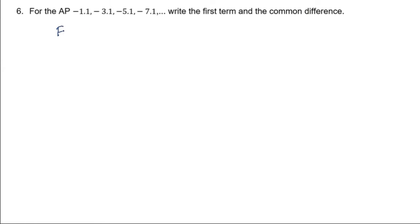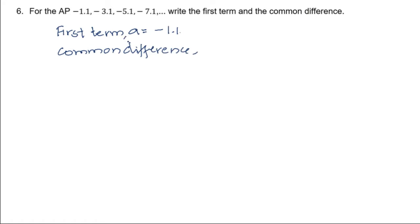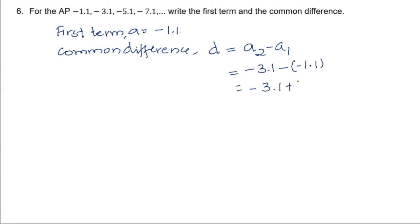Here the first term is minus 1.1. The common difference is the second term minus the first term. Usually the first term is denoted by letter 'a' and the common difference by letter 'd'. So if I write a2 minus a1, the second term is minus 3.1 minus of minus 1.1, we get minus 3.1 plus 1.1, and the difference is negative 2. Hence the first term is minus 1.1 and common difference is negative 2.